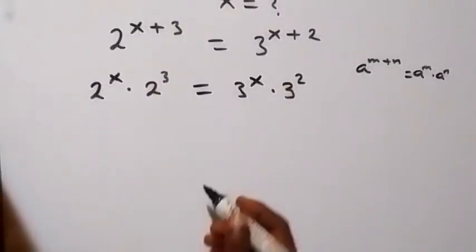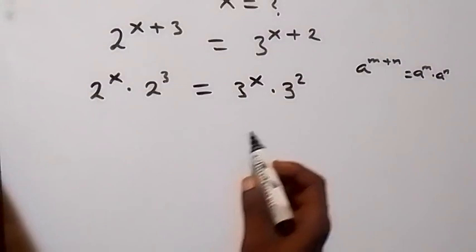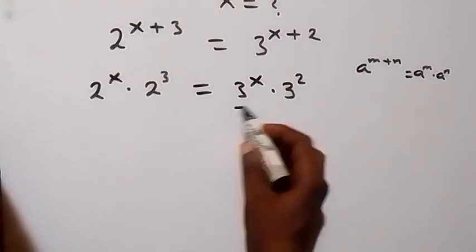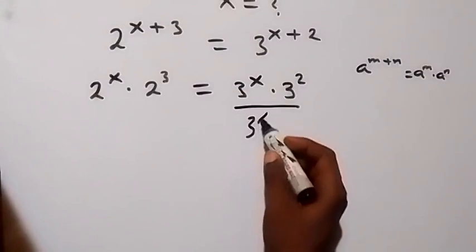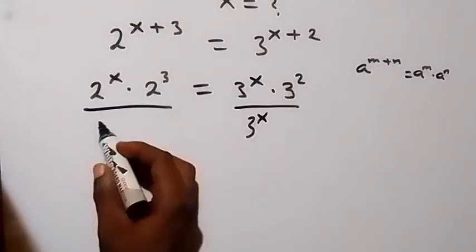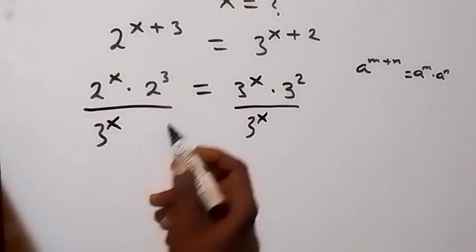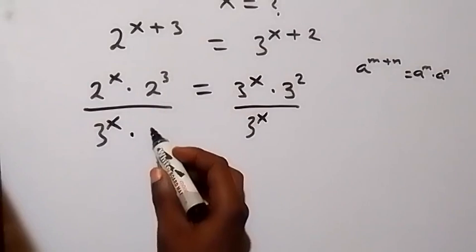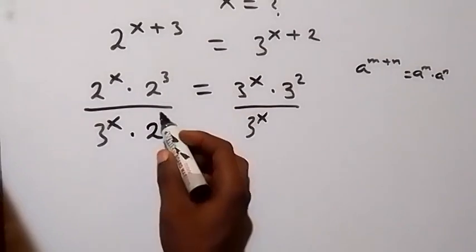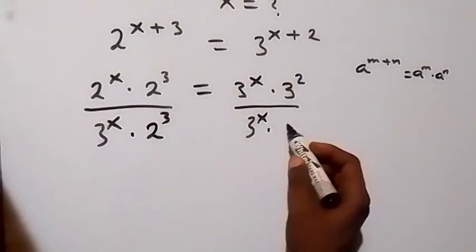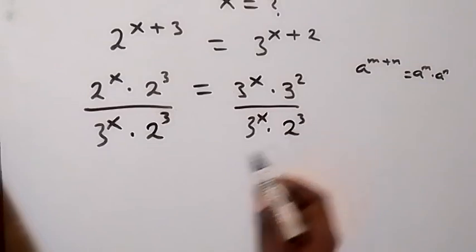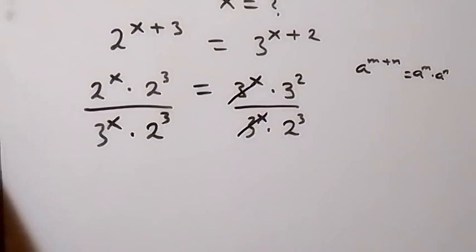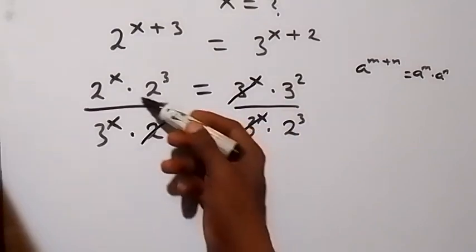And from here, let's separate the power of x to one side. Here now we divide both sides by 2 raised to power x, so we divide this side as well by 3 raised to power x. And let's separate the numbers to the other side as well, so that means we divide this side by 2 raised to power 3, and we divide this side by 2 raised to power 3. And this power of x cancels out, and 2 power of 3 cancels out here.